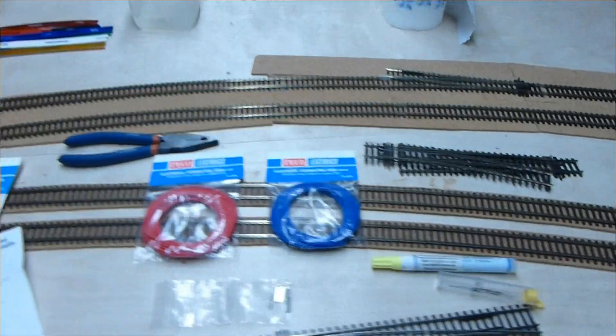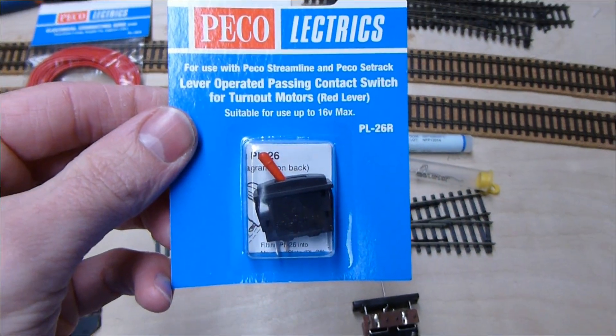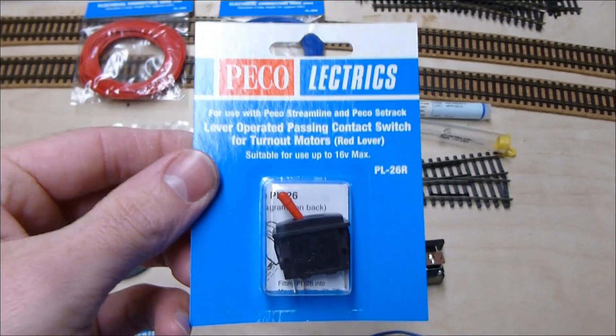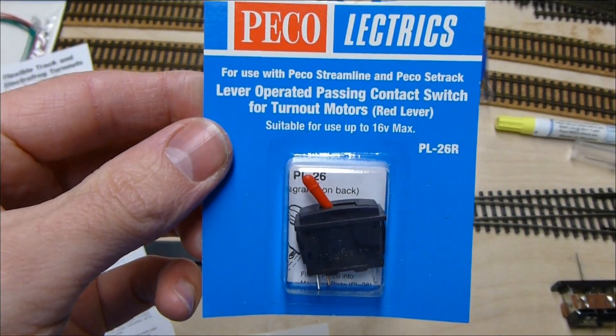And you've also got your standard wires coming from your point motor, which are separate, which go to the switch unit. In my case, I take them back round, and they go into one of these levers. That's a PL26R. You get yellow, black, and white, and that's ideal for working turnouts.